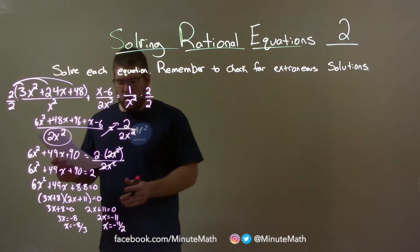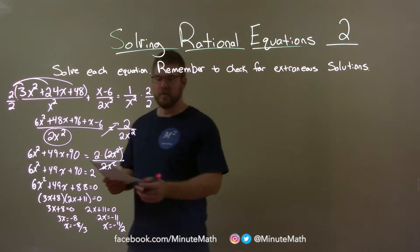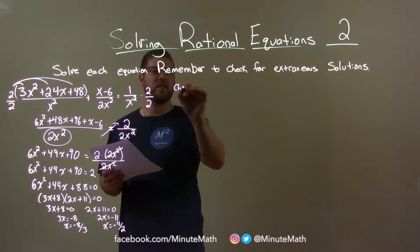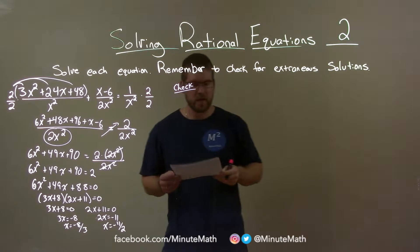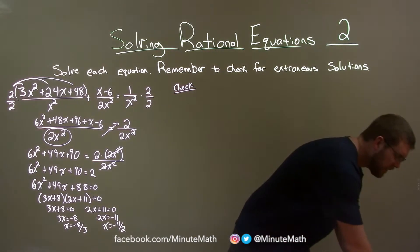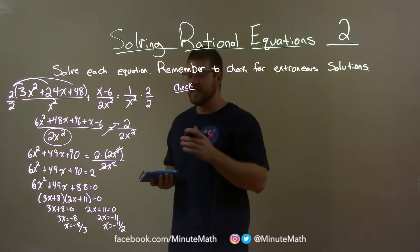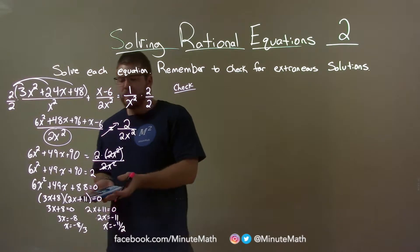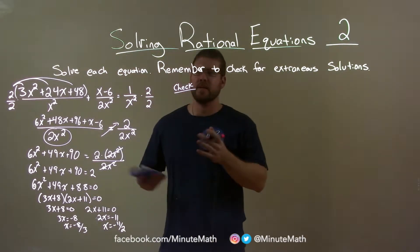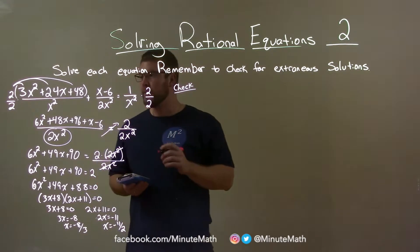So we have our two numbers there, and they tell us that we need to check for extraneous solutions. All we're really going to do here is take my original equation, and for each one, instead of x, we're going to put in the value and see if the left and right hand side are equal.